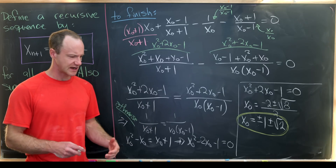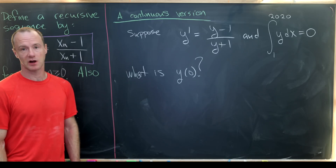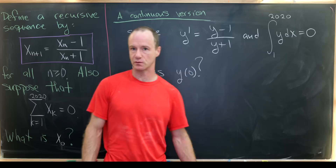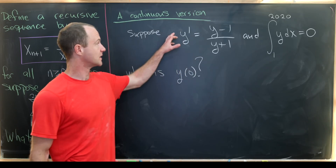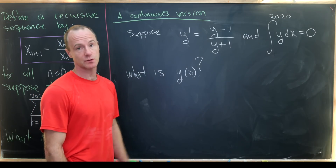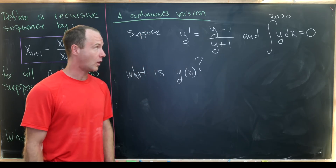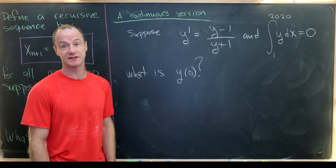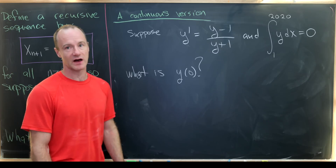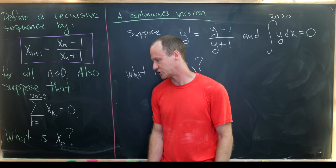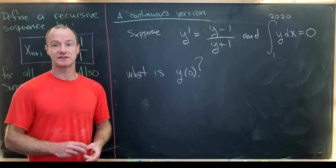Before ending, here's a continuous version of this problem as homework. The one-step recursion becomes the first-order ODE y prime equals y minus 1 over y plus 1, and the sum becomes the integral from 1 to 2020 of y dx equals 0. The goal is to determine the initial value y(0). Post your solution in the comments — and that's a good place to stop.